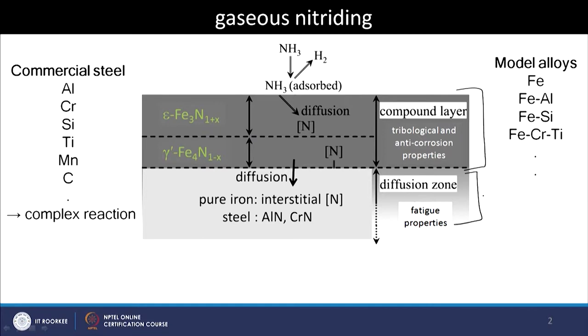The other layer is the diffusion zone, which we also discussed, including what kind of properties are obtainable from it. A commercial steel contains several alloying elements added to give bulk properties essential for the component. When doing nitriding of a commercial steel, this becomes a very complicated situation because nitrogen is diffusing inwardly into the sample and we need to understand how nitrogen interacts with all the elements individually or collectively, leading to the overall nitriding response.